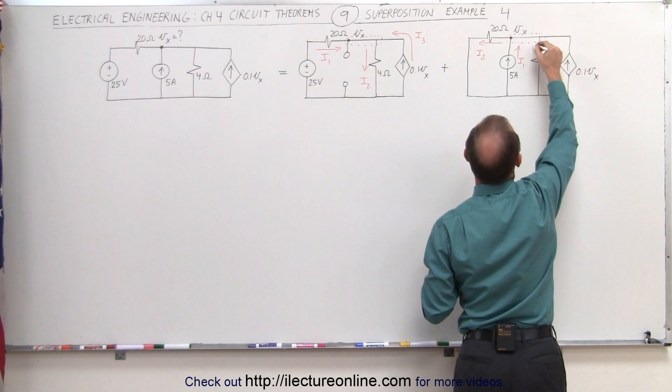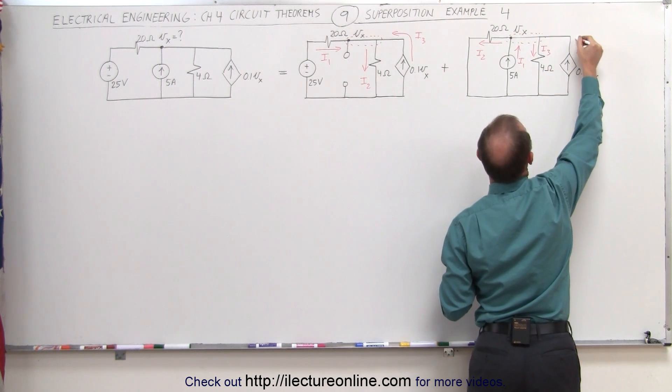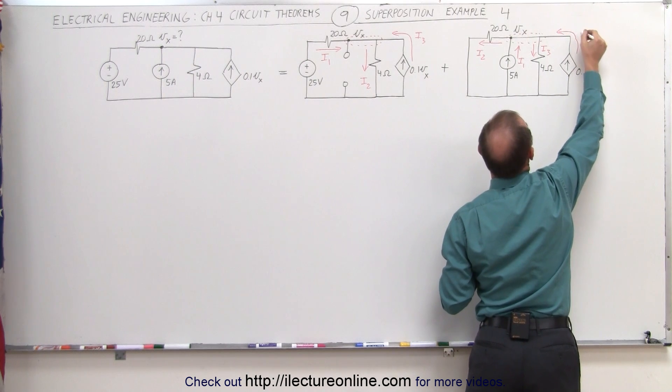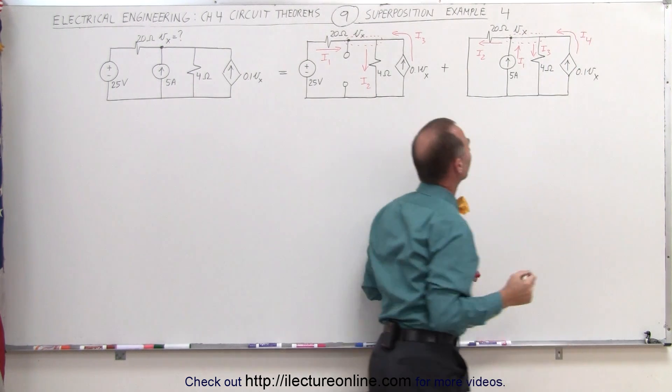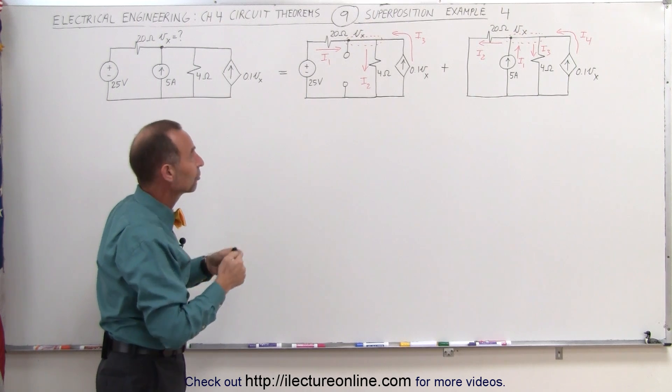We have a current probably in this direction, let's call this I3, and a current in this direction, let's call that I4. In this case, we have four currents to deal with that either leaving or entering that node.